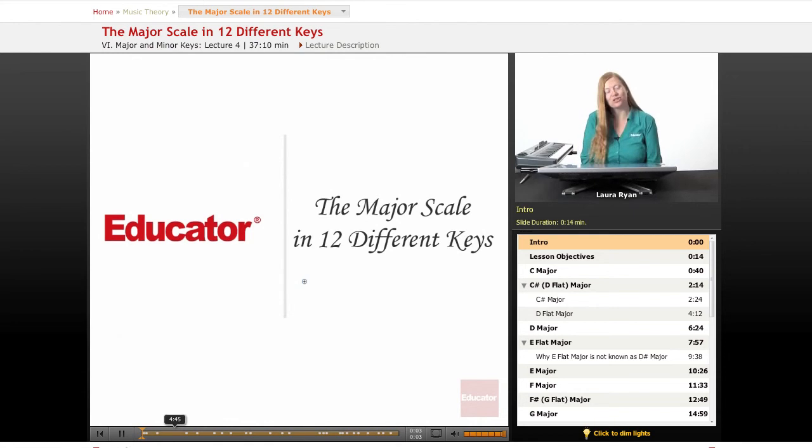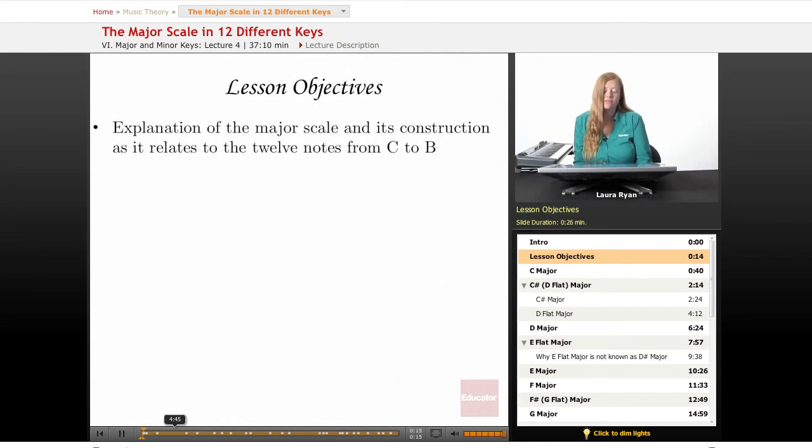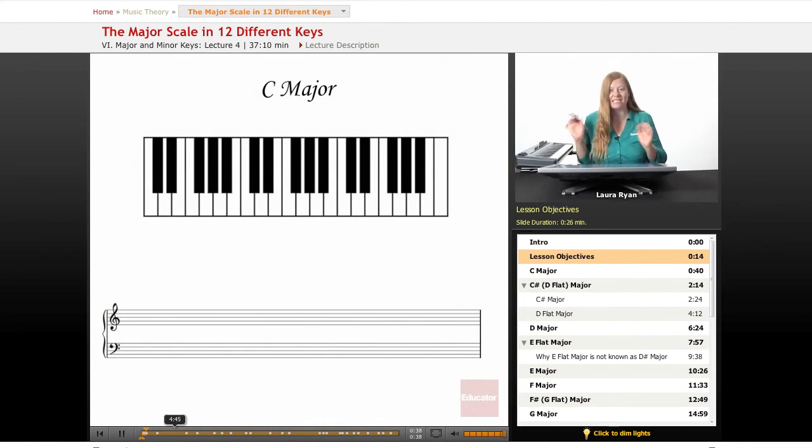Welcome back to Educator.com, Introduction to Music Theory. Today's lesson will be the major scale on 12 different keys, every single key on the keyboard. Let's begin by talking about our lesson objectives. We'll be explaining the major scale and its construction as it relates to every note on the keyboard, from C to B. This lesson we will be playing a major scale on every key starting with C major.